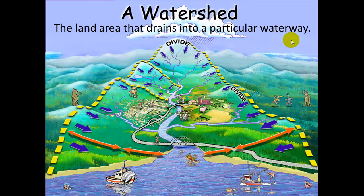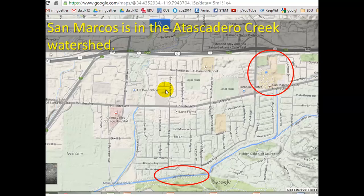Here we have the concept of a watershed. This whole area is a watershed for this main river, but we also see smaller watersheds that feed into it. This area right here is a watershed for this little creek, and this next region is a watershed for a different creek — ultimately they flow to the same place. San Marcos is in the Atascadero Creek watershed.